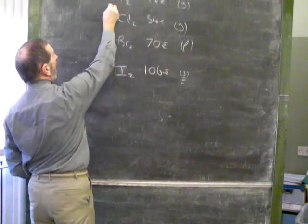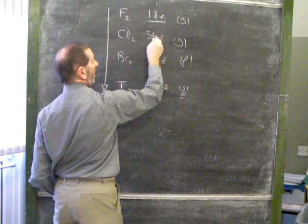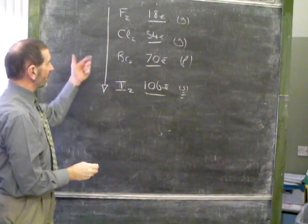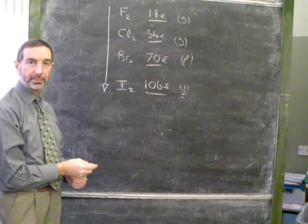To finish, we conclude: as we go down group 7, the halogens, as the number of electrons in the molecule increases, the charges increase, and the Van der Waals forces become stronger.